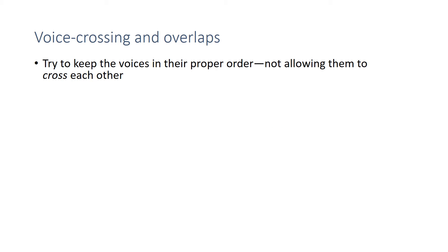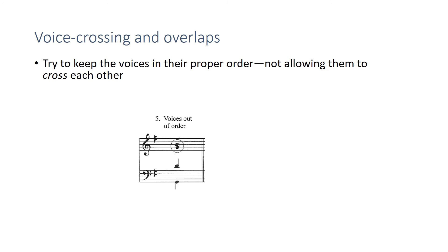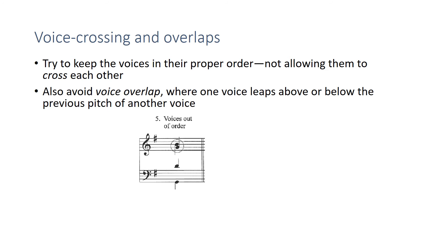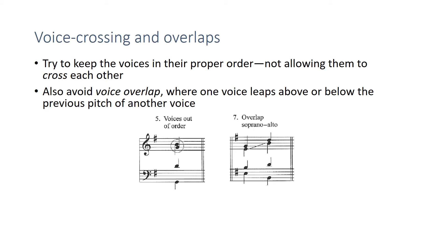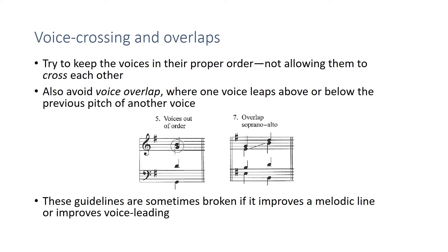Voice crossing: we try not to have much voice crossing — keep the voices in the proper order. Here, because of the stems, you can see the alto is singing above the soprano. In theory exercises, there's not much need for this, though it could happen in a choral piece. Another thing to generally avoid is voice overlap, where one voice leaps above or below the previous pitch of another voice — for example, the alto leaps above where the soprano previously was. That's not terrible, but it can make things tricky for the singer. These are guidelines, not rules. If it improves the melodic line or voice leading, sometimes we won't follow them, but in general you would want to, as it usually makes things smoother.